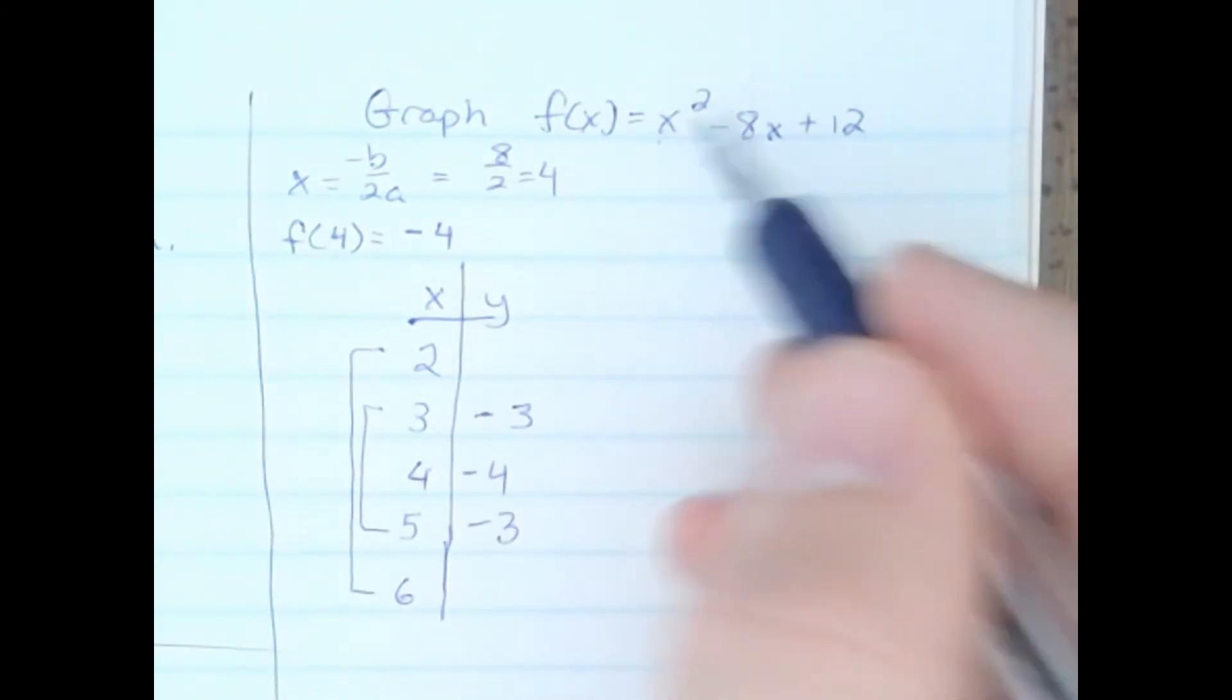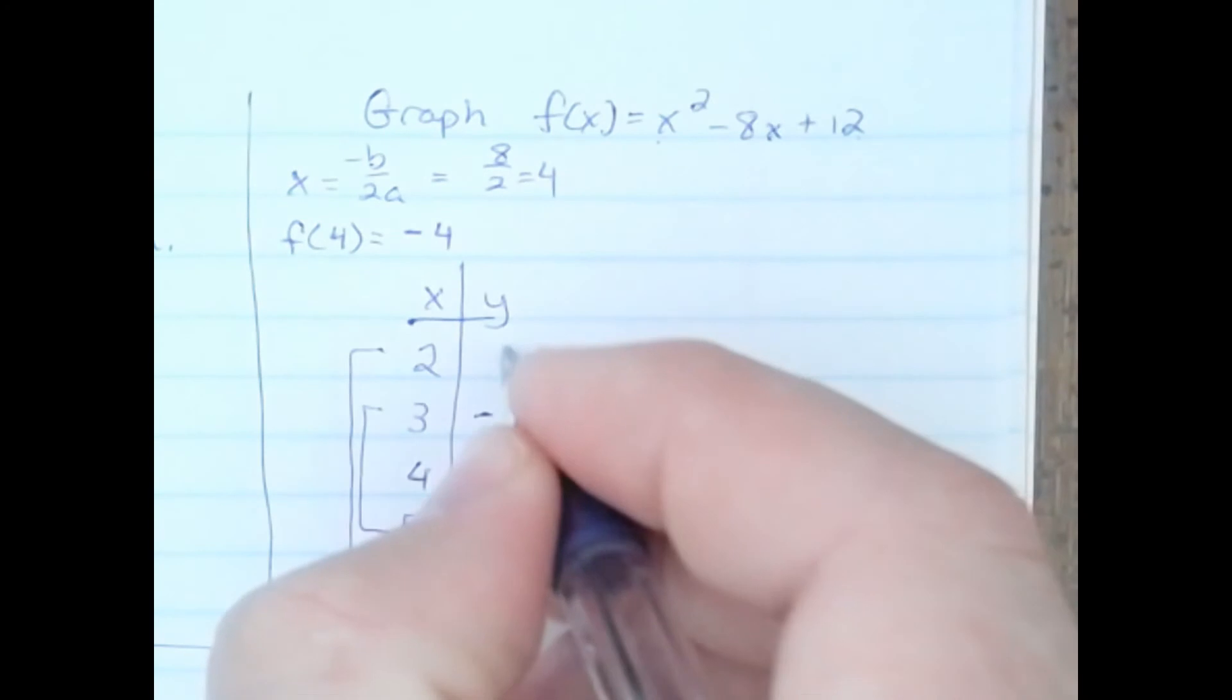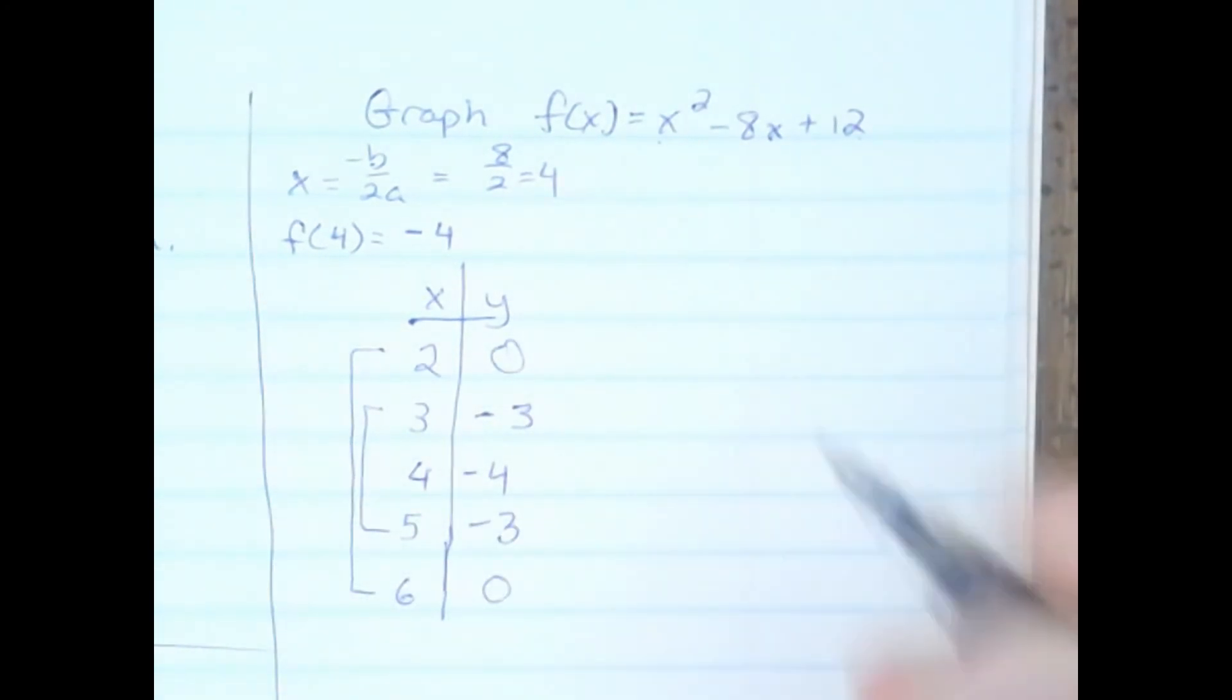Now let's do it for 2. 2 squared is 4, 8 times 2 is 16, 4 minus 16 is negative 12, negative 12 plus this 12 is 0. This y-value is 0, and this y-value is 0.